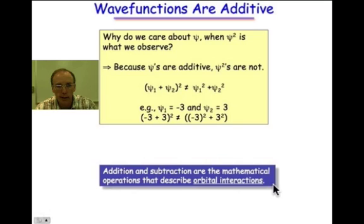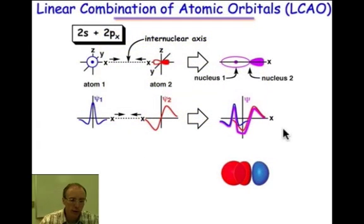In this webcast, we're going to take a look at the process of orbitals that interact and what it means for orbitals to interact. We'll take a look at a specific example: the combination of a 2s orbital on atom 1 and the 2px orbital on atom 2.